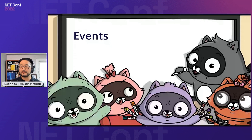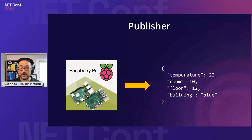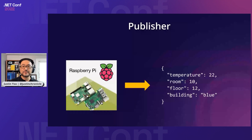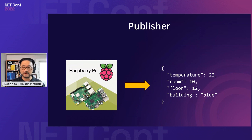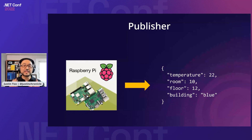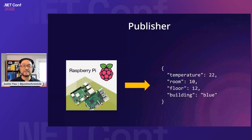What are those events in terms of our event-driven system? There are three players around those events. The first one is the event publisher — event publisher creates events. So on the screen here there's a Raspberry Pi application, which is a typical IoT device, and it captures the room temperature around that device. It builds event data like room temperature, room number, floor number, and building name, and emits them.